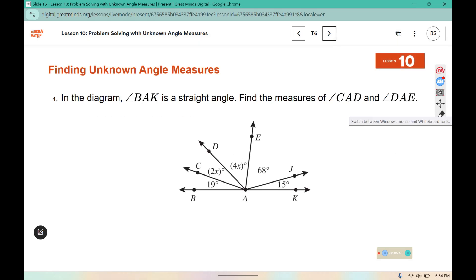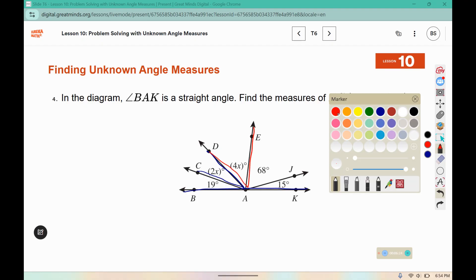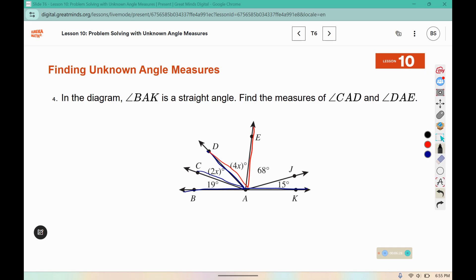In the diagram, angle BAK is a straight angle. Find the measure of angle CAD and DAE. These all add up to 180 since it makes a straight angle. So we can combine our like terms. We have the variable pieces that can get combined.